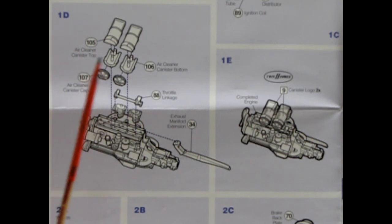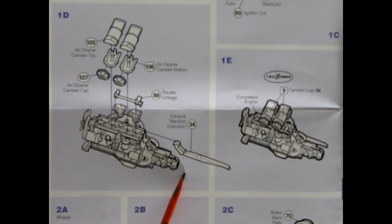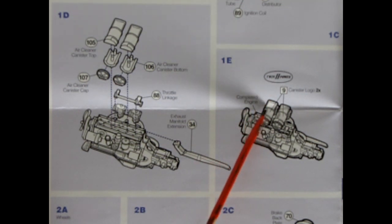Our next panel shows our three piece air cleaners going on. You've got a top, a bottom, and an end cap. Then we've got our throttle linkage as well as our exhaust manifold. This is followed up with the application of our twin H power decals which go on both of the air cleaner canisters.